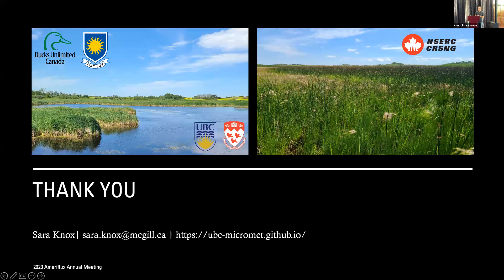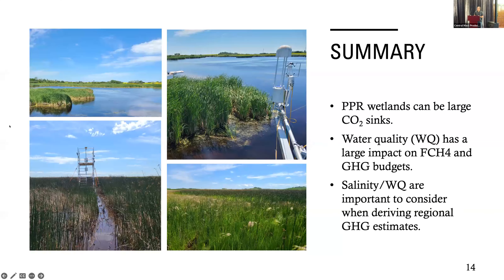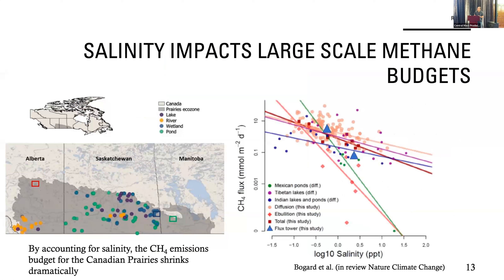Question: You said conductivity would be an important proxy for upscaling, but how available are conductivity maps across the pothole region? Have you thought about using spectral properties of different plant communities, since conductivity might affect plant community composition which you could pull out from remote sensing? At the moment we've relied on spatial sampling to estimate this at broader scales. I do have a postdoc looking into this, trying to relate remote sensing indices to pick up some of these water quality signals using remote sensing.